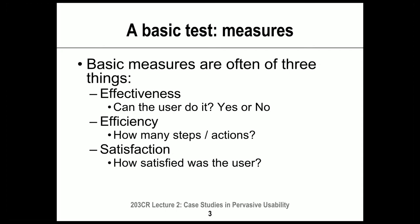Another thing we can measure is called efficiency — the number of steps or stages that a user has to go through in order to complete a task. So we're counting how many steps they go through to achieve something, measuring actions or clicks. For the example about adding a contact on an iPhone, we'd see how many steps users go through, how many screens, how many clicks.